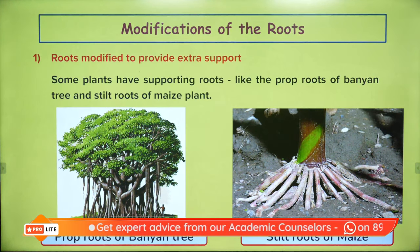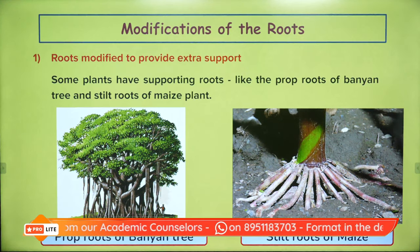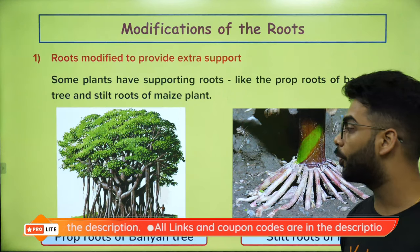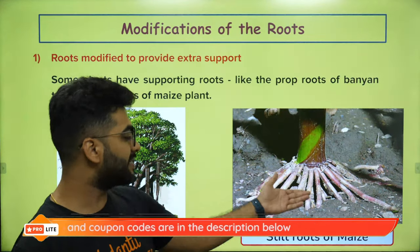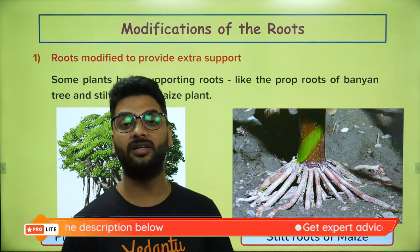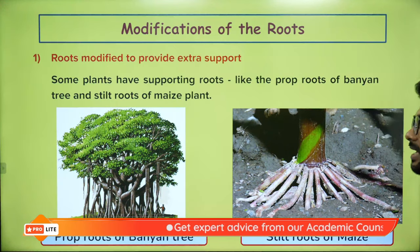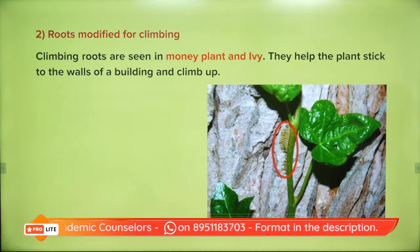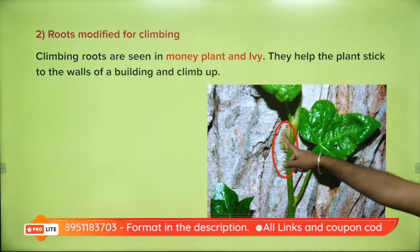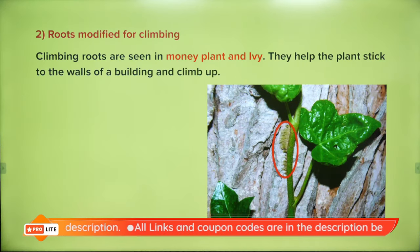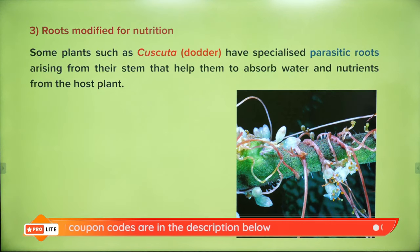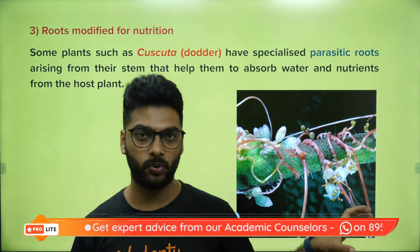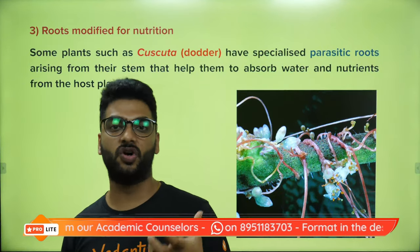There are also modifications in the root. Some roots are modified to provide extra support — these are called prop roots, seen in the banyan tree, on which many of us hold and take a swing. Additional roots seen in maize are called stilt roots. There are also roots which come out from the ground, called pneumatophores, seen in mangroves. Some roots are meant for climbing, seen in the money plant.